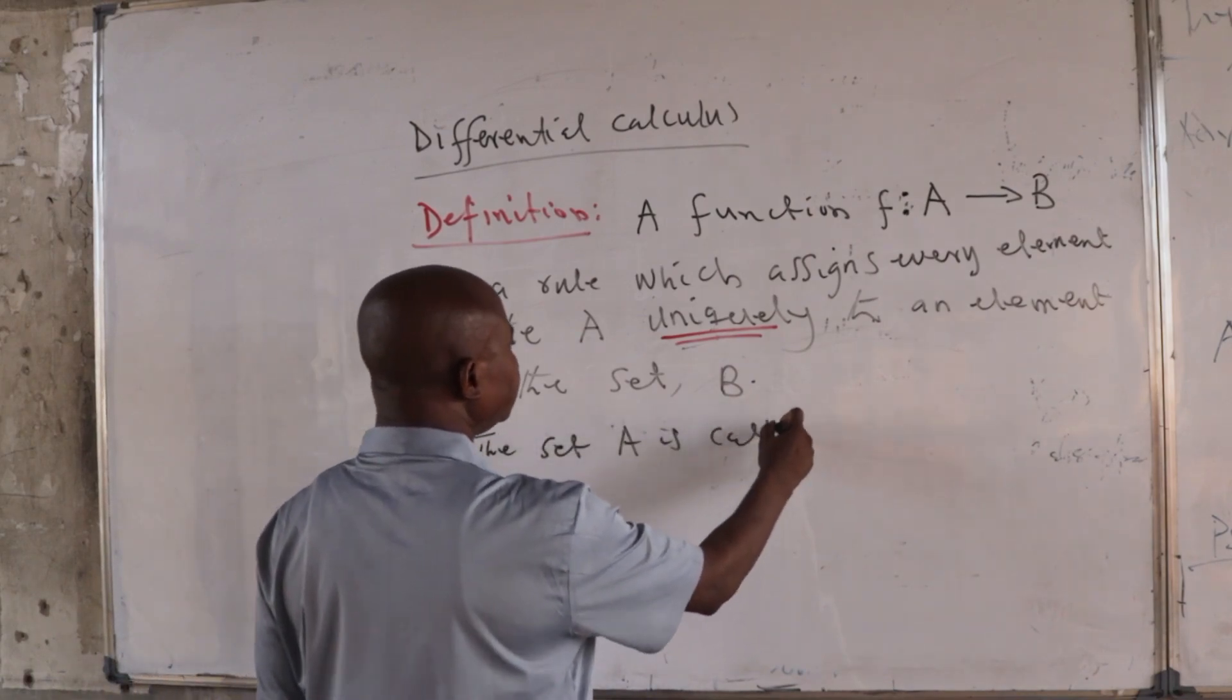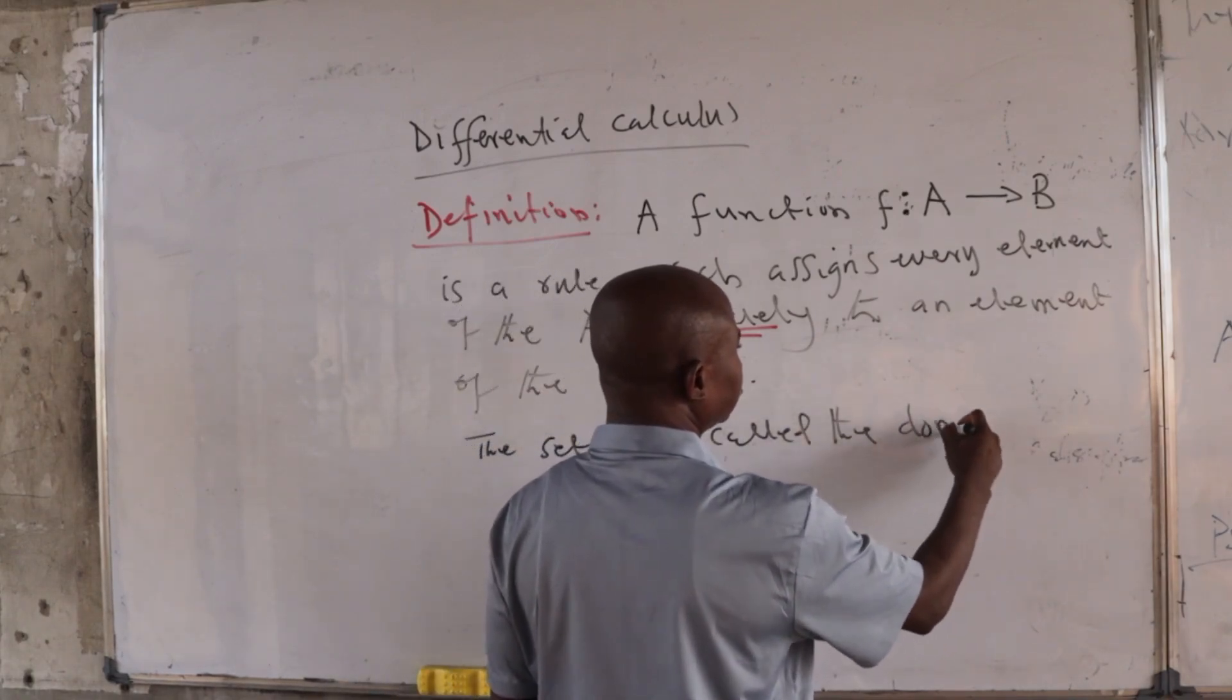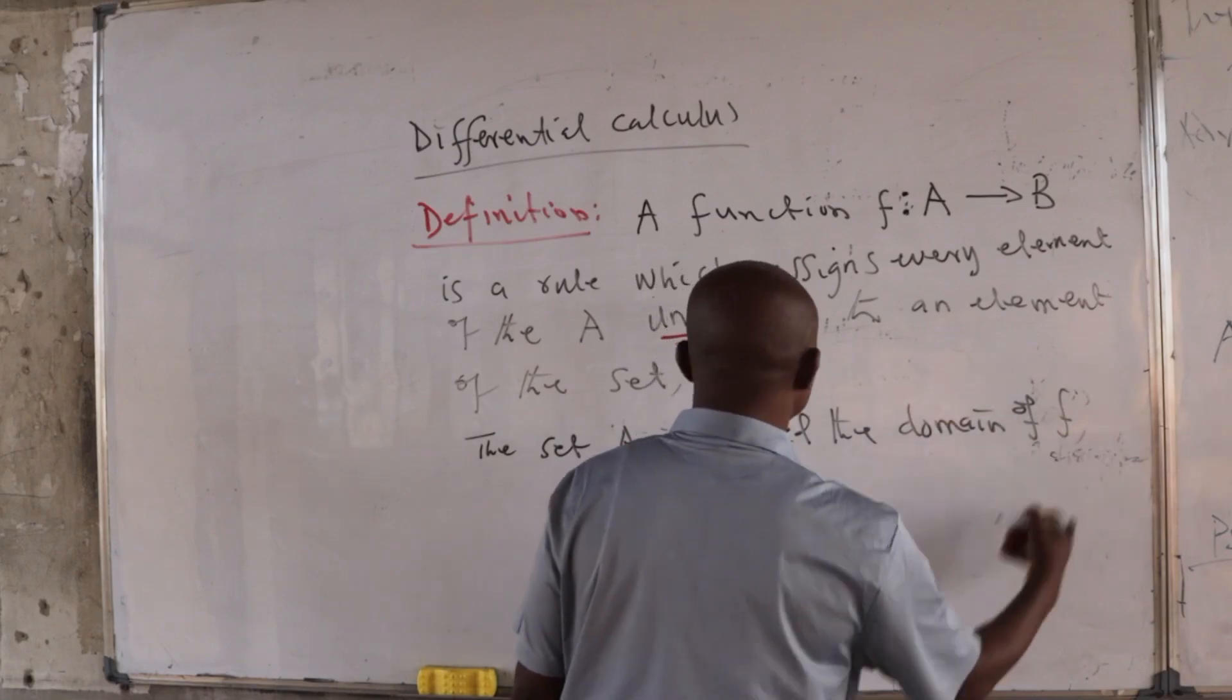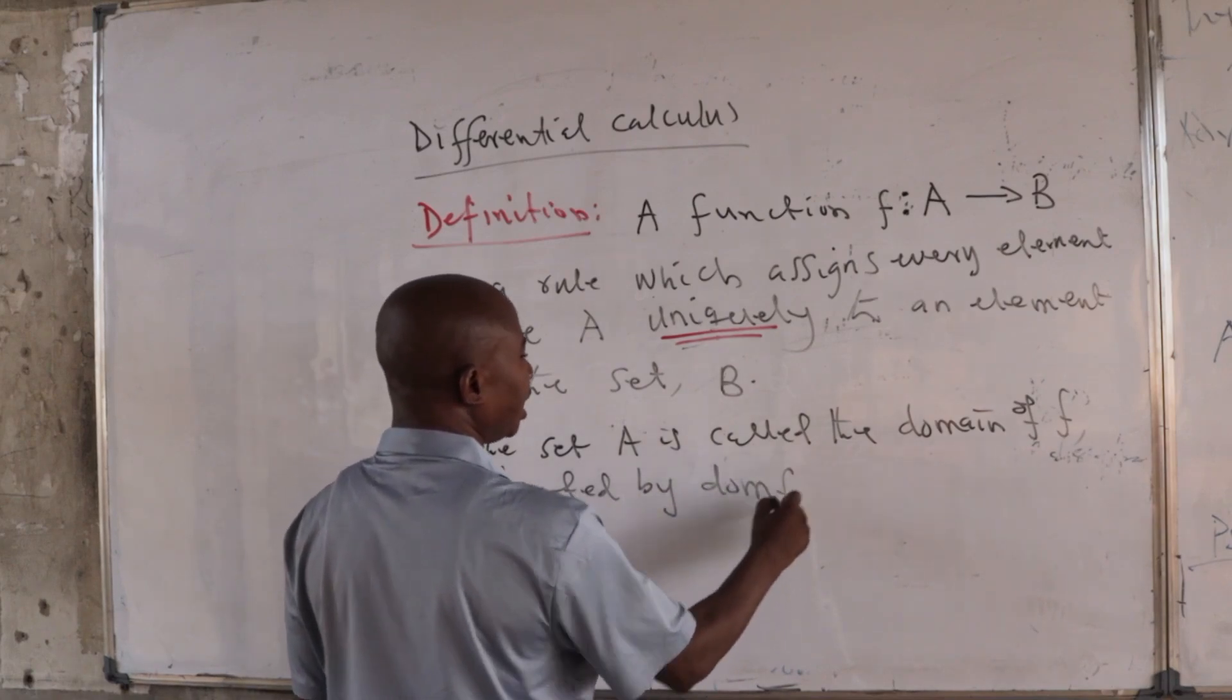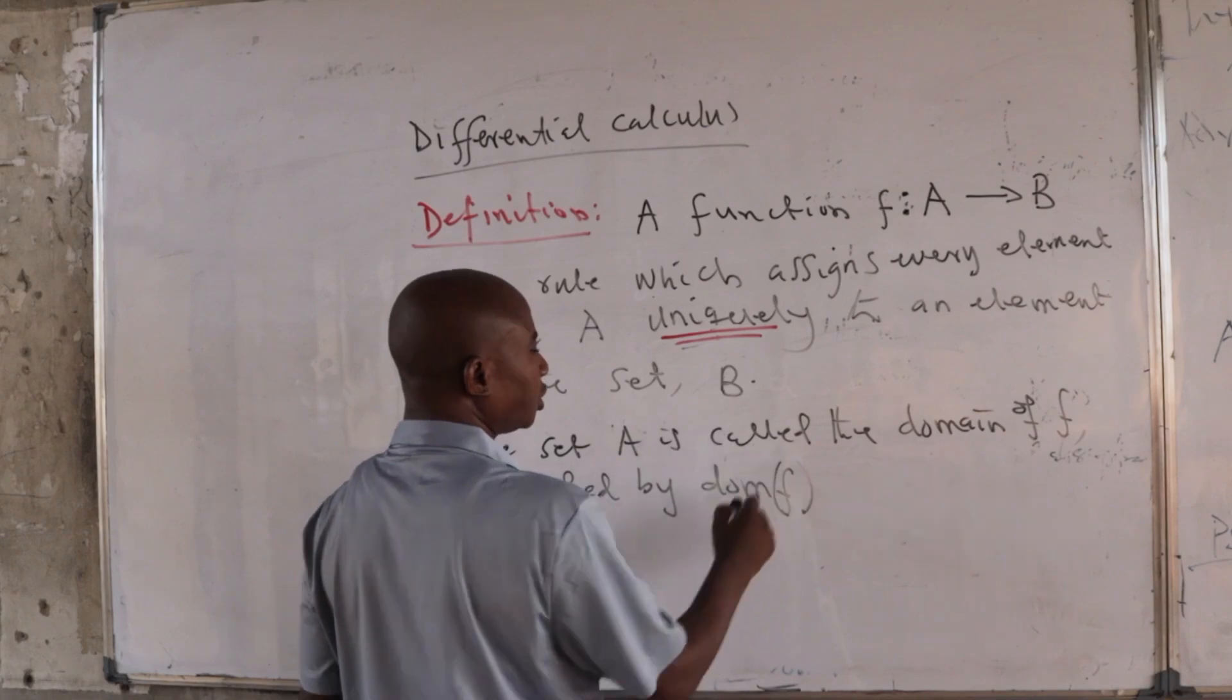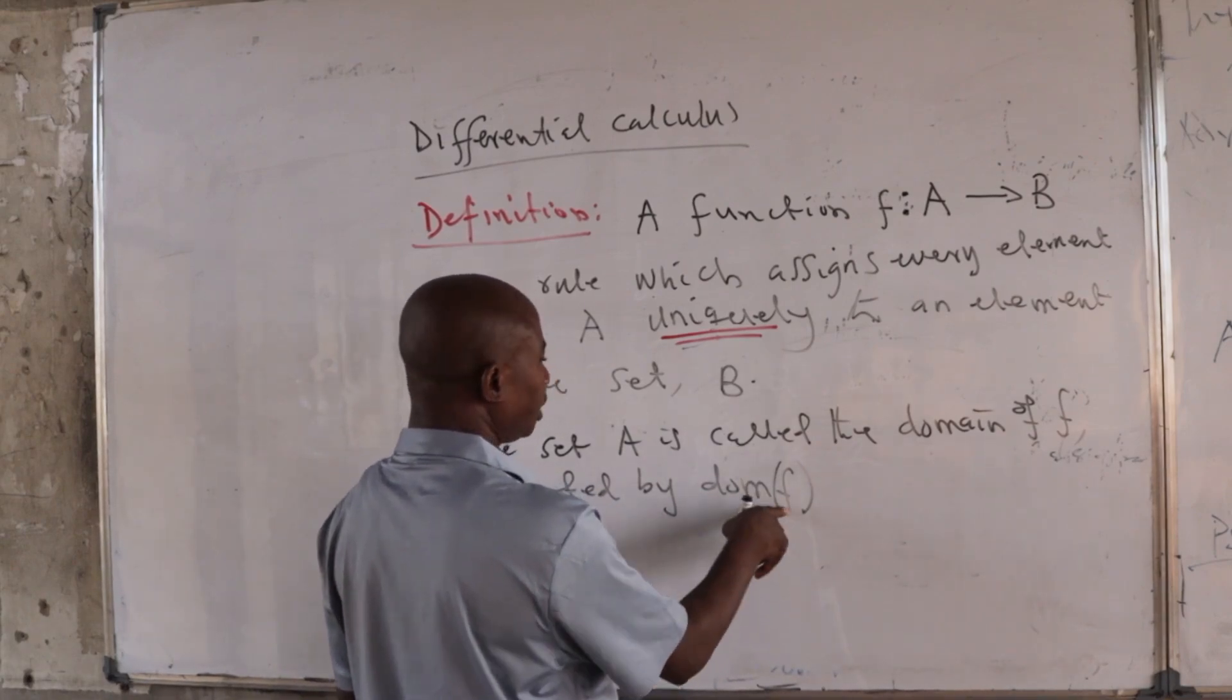The set capital A is called the domain of the function F, denoted by DOM F. This is the notation I choose to use all through the discussion. So anywhere we find this: domain of F.